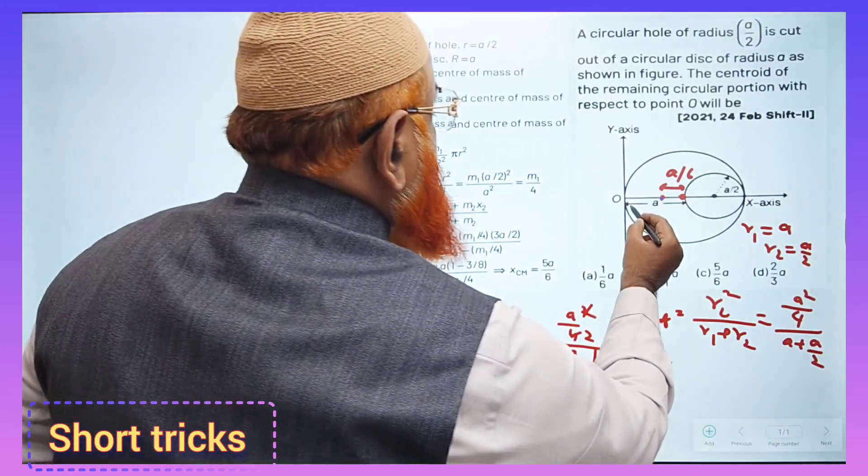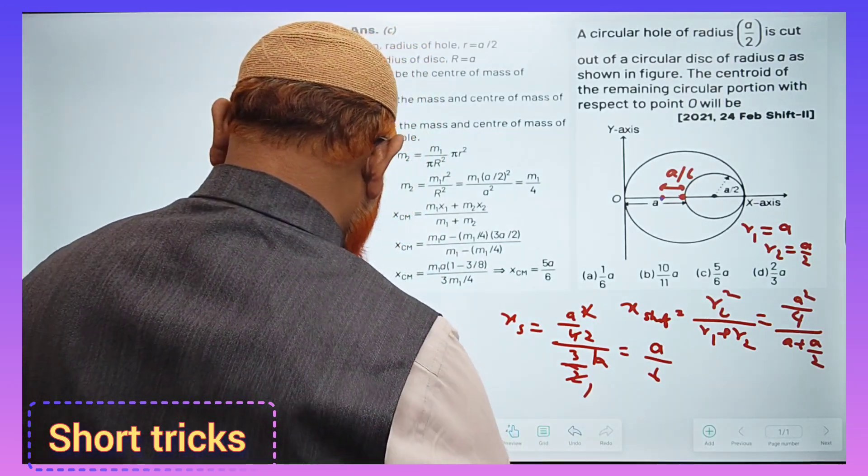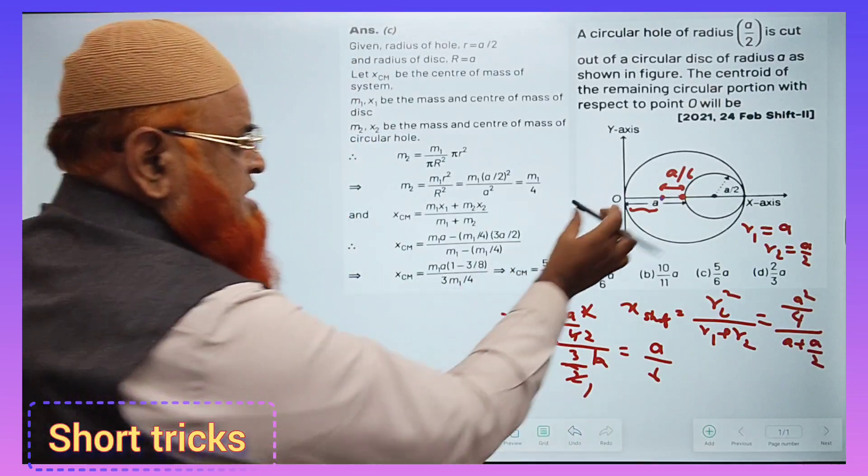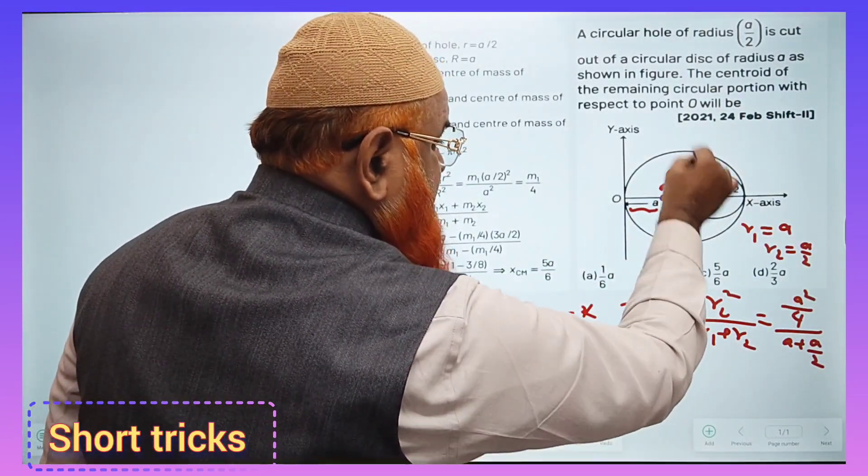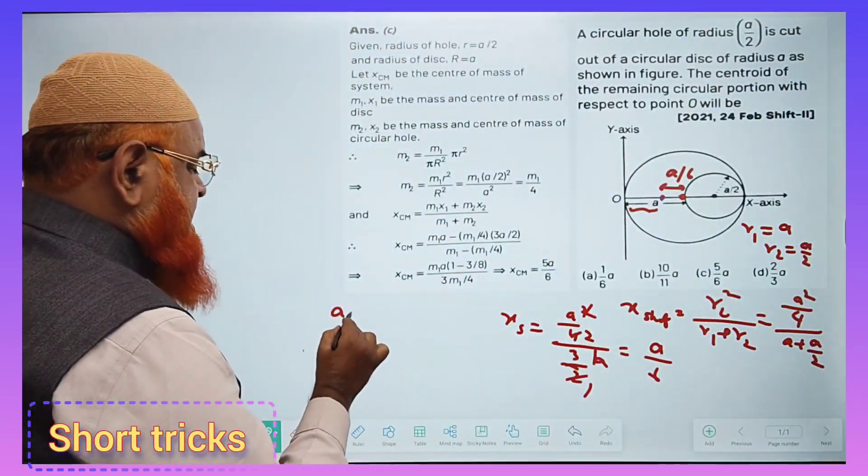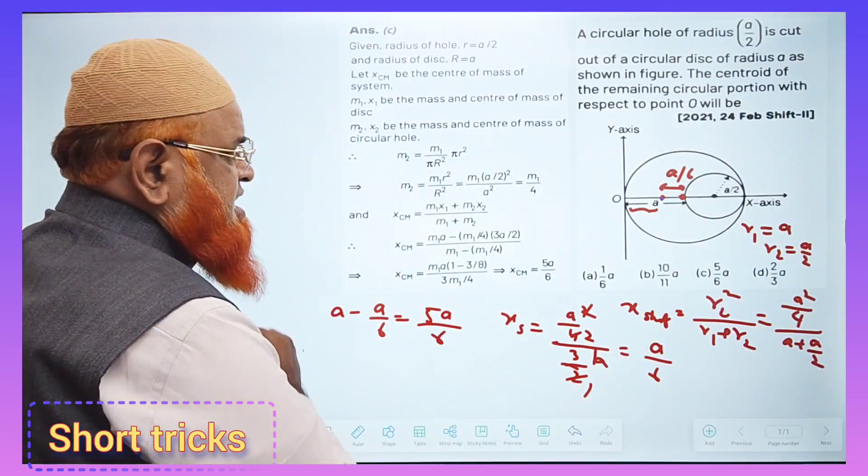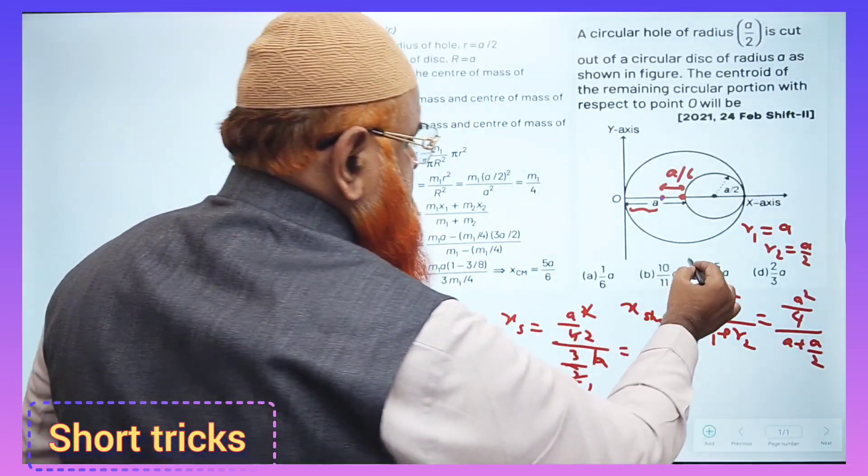It's very simple. You have to find out this distance now. For that you have to subtract a/6 from a. So you'll be getting 5a/6. This is a different approach to solve the problem and your answer is going to be option c.